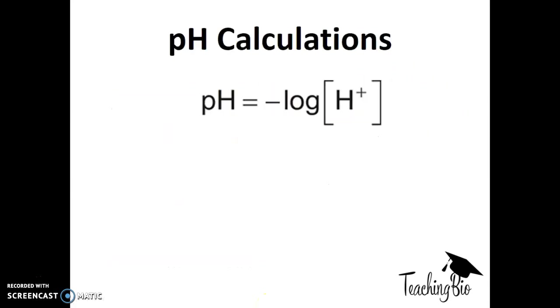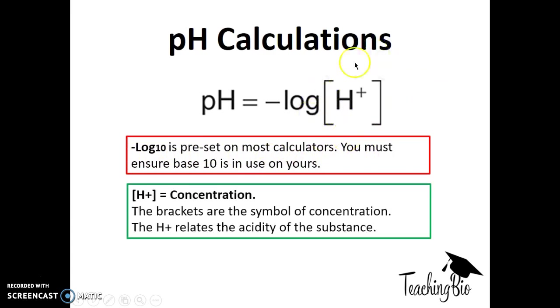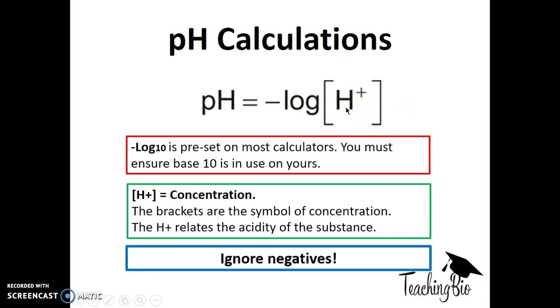Now we're going to look at pH calculations and how to do them. pH equals minus log to the base 10 of H+. Minus log 10 is preset on most calculators, but make sure you have base 10. The H+ part in brackets refers to concentration. The brackets symbolize concentration, and H+ symbolizes the acidity of the substance. In biology—you do this in chemistry as well—just ignore any negative pHs.